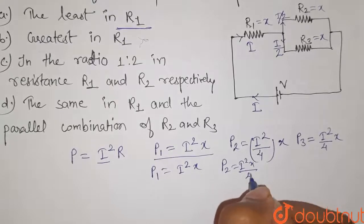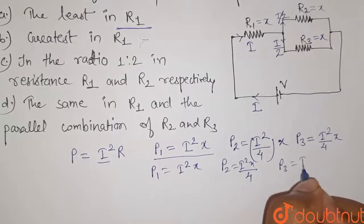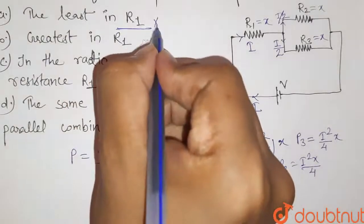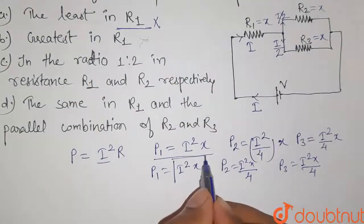It is I squared X divided by 4, and it is also I squared X divided by 4. So this option is wrong because it is not the least value.